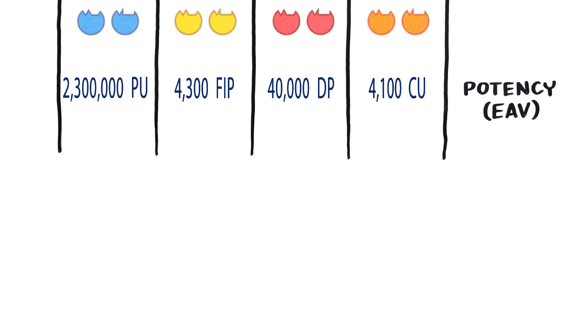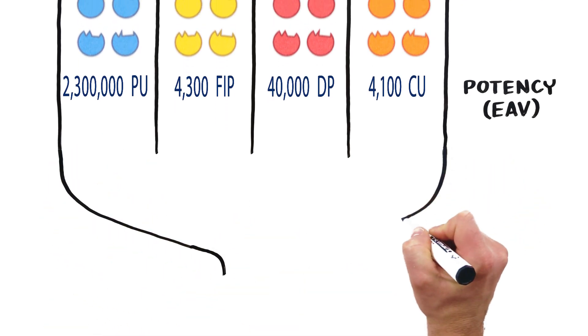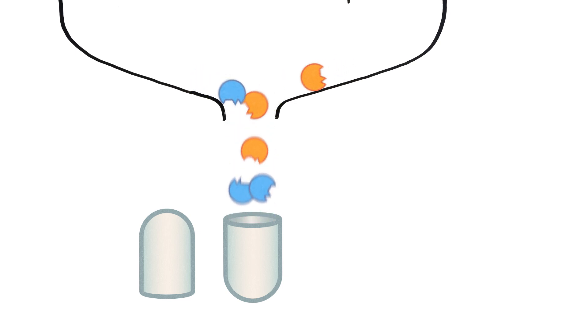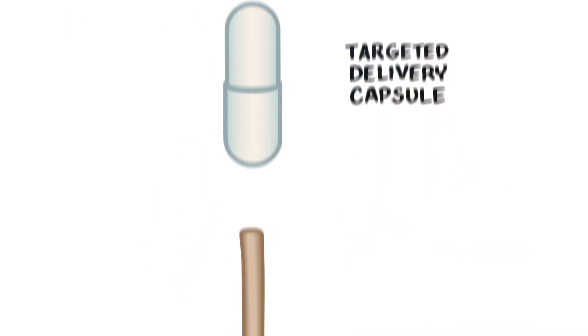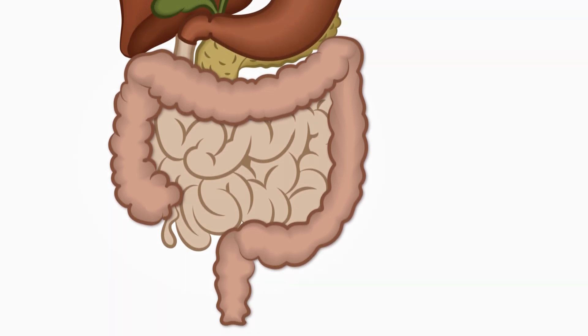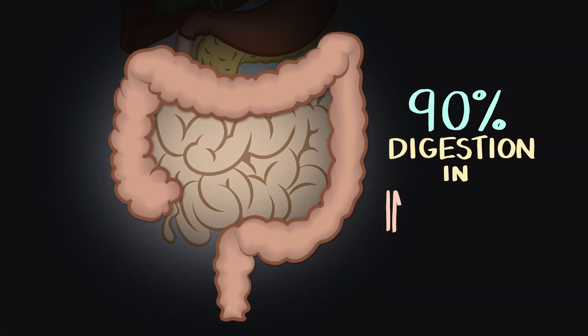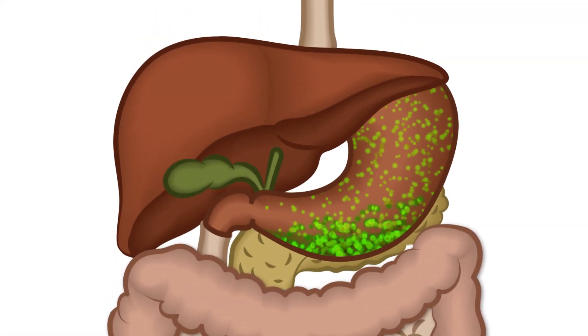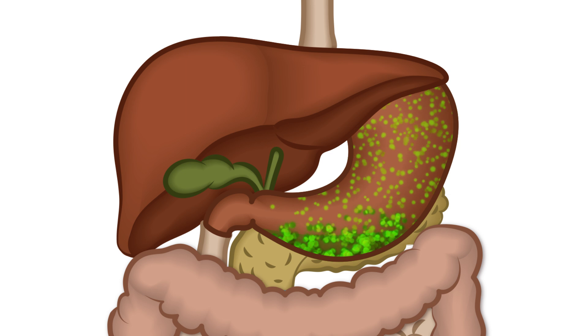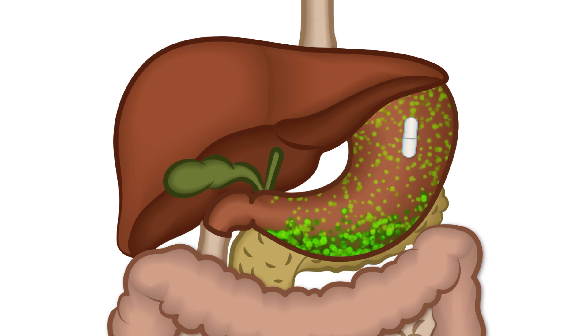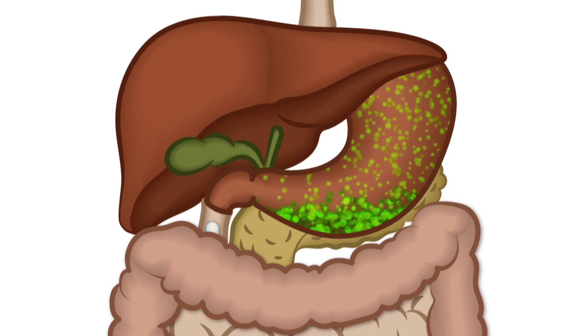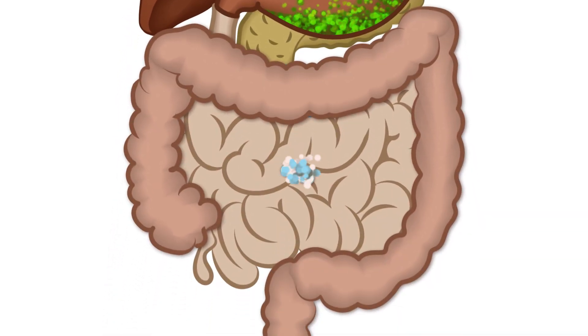And while rules one and two are important factors to consider, they do little good without rule number three, a targeted delivery capsule. Enzymes can be found throughout the digestive system, but 90% of digestion actually occurs in the intestines, where the vast majority of nutrients are absorbed. Much like probiotics, enzymes are sensitive to the acid in the stomach. So, with a targeted delivery capsule, the enzymes are protected until they finally reach the intestines, where they are most effective.